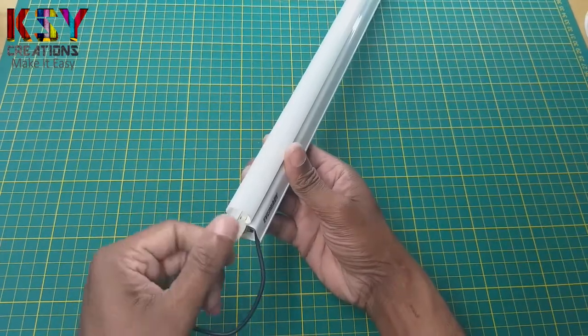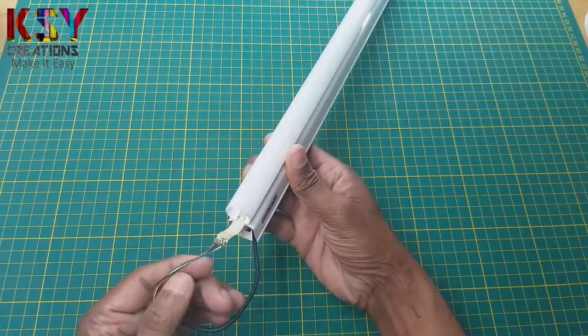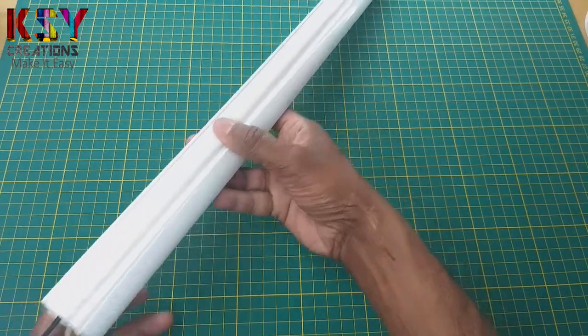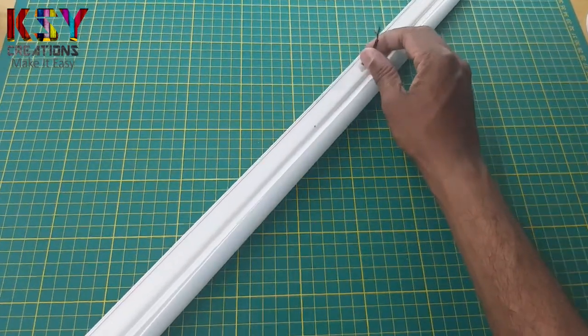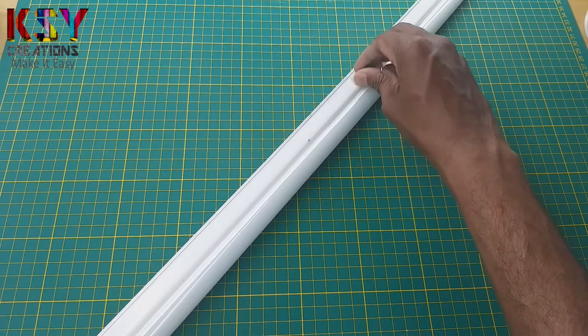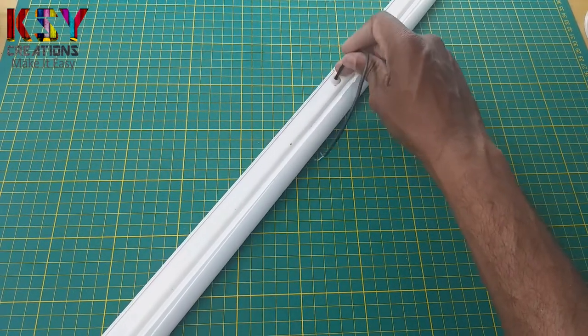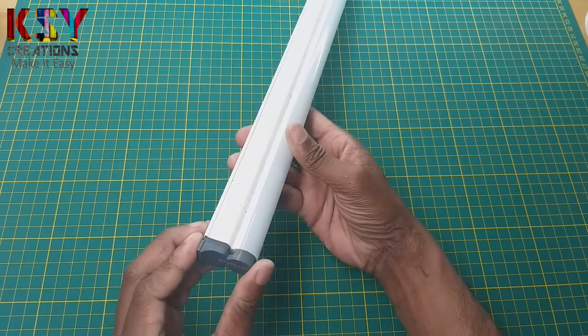You can see I have inserted this LED strip into this and also I have connected four wires to this, and I have taken this input wire from here. Now I will close this with the side cover.